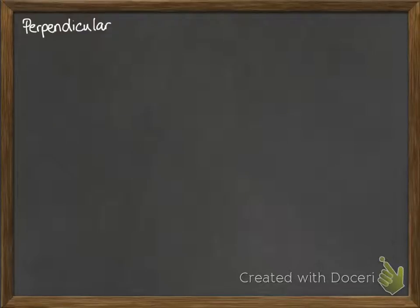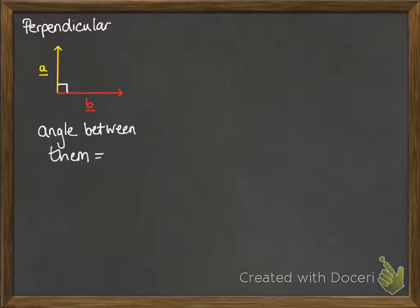We're going to follow that line of reasoning looking at perpendicular vectors. Here we have A and B that are perpendicular to each other, so there's a right angle between them.